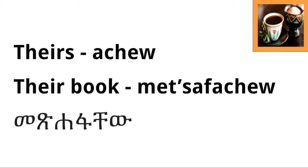And then for 'theirs,' speaking about a group of people in the third person, the ending is similar to the second person plural but with a slight difference. The possessive ending for theirs is '-acho.' So if we wanted to say 'their book' — book in Amharic is 'mitsaf' — it becomes 'mitsafacho.'